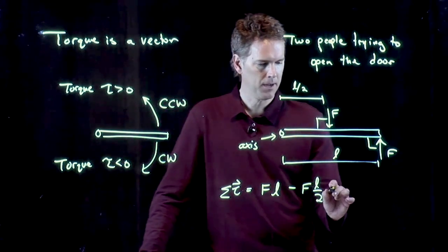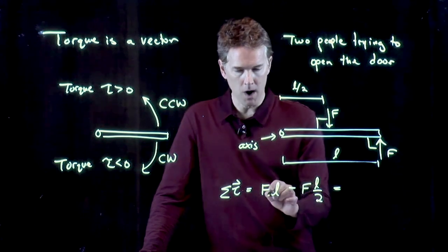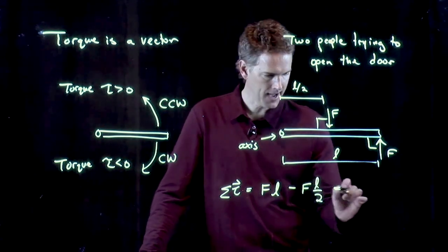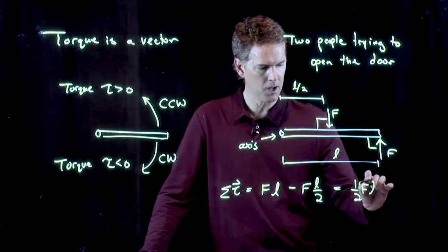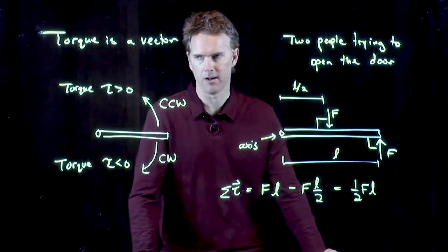And now we see what happens. We get 1 FL minus 1 half FL, and so we end up with 1 half F times L.